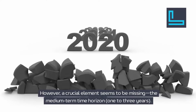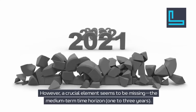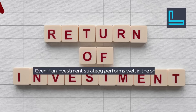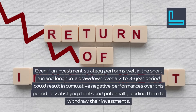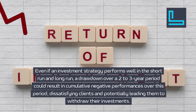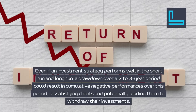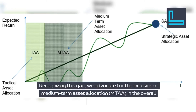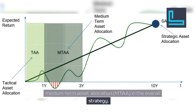However, a crucial element seems to be missing: the medium-term time horizon of one to three years. Even if an investment strategy performs well in the short run and long run, a drawdown over a two to three-year period could result in cumulative negative performances, dissatisfying clients and potentially leading them to withdraw their investments. Recognizing this gap, we advocate for the inclusion of medium-term asset allocation (MTAA) in the overall strategy.